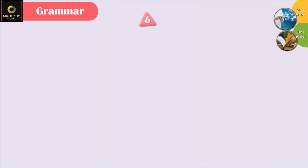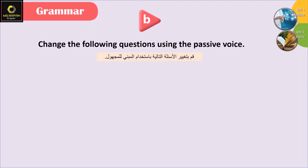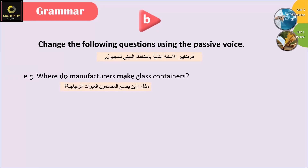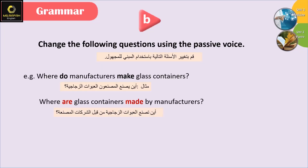Now let's move on to the next exercise: change the following questions using the passive voice. For example: 'Where do manufacturers make glass containers?' becomes 'Where are glass containers made by manufacturers?'